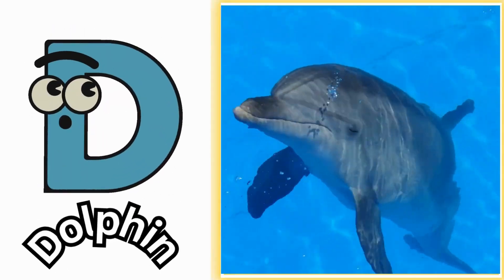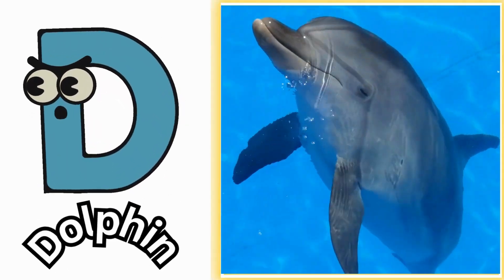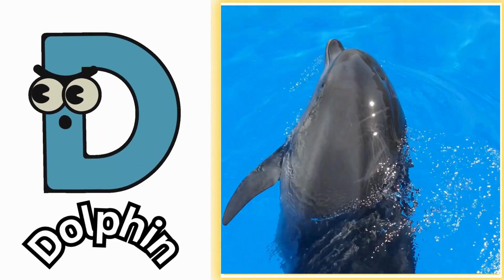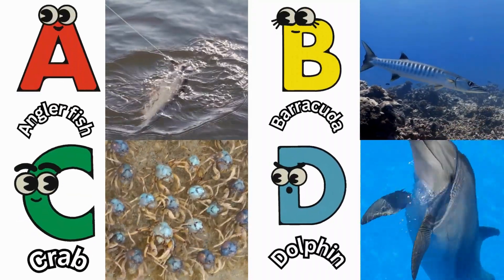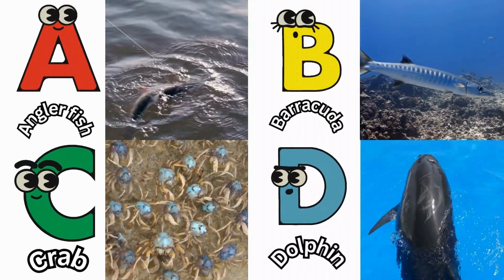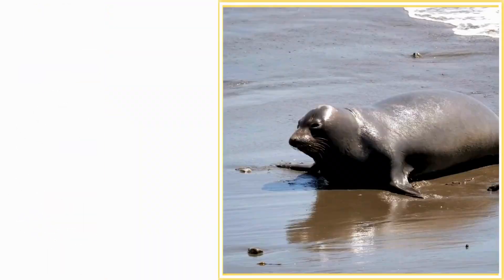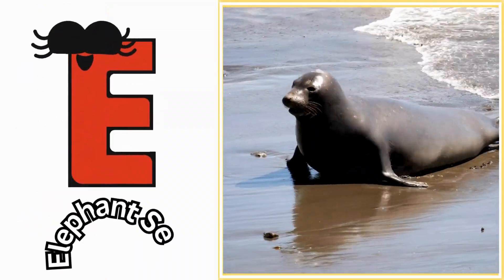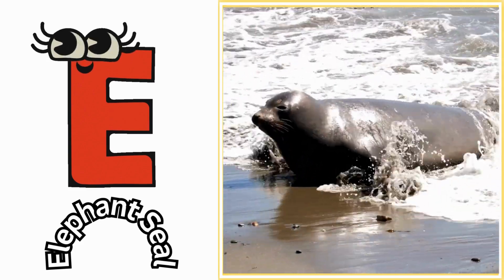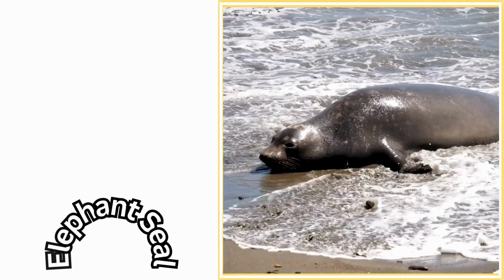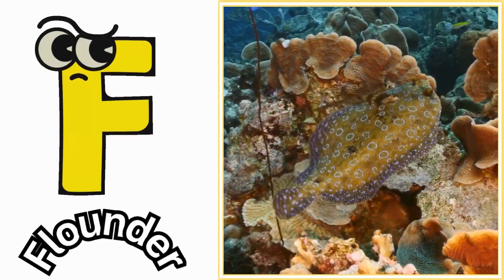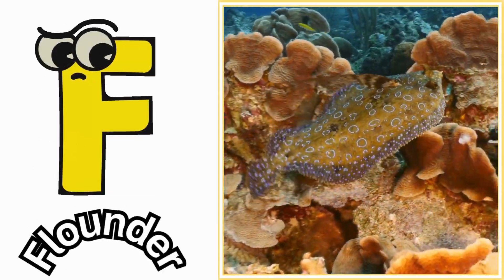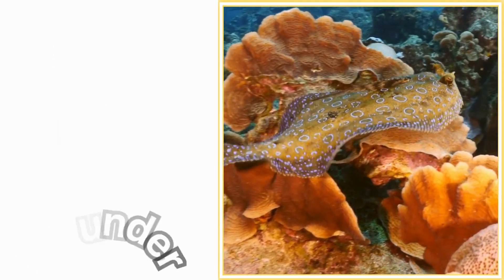D is for dolphin. E is for elephant seal. F is for flounder.